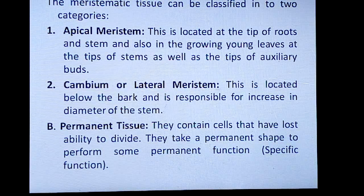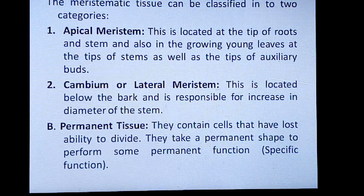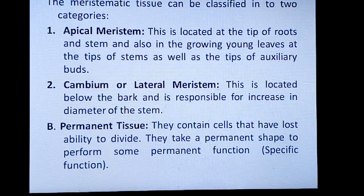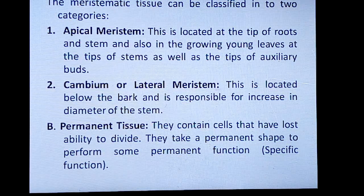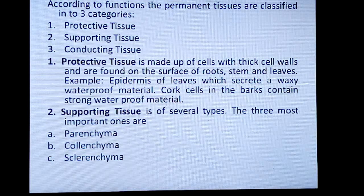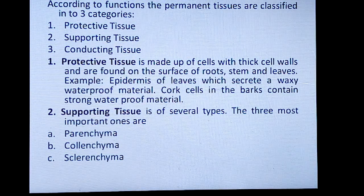Permanent tissues contain cells that have lost the ability to divide — that means they do not divide further. Once division is over, there is only growth. Such tissues are called permanent tissues; they take permanent shape to perform specific functions. Permanent tissues are classified into three categories: protective tissue, supporting tissue, and conducting tissue.